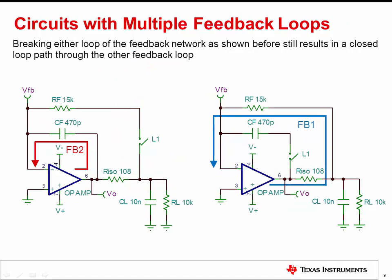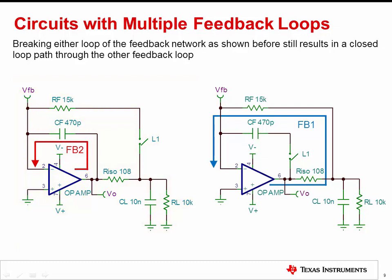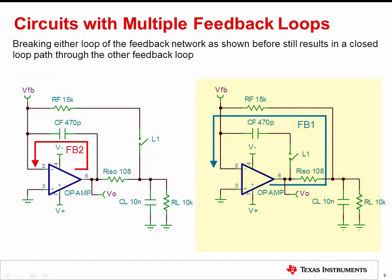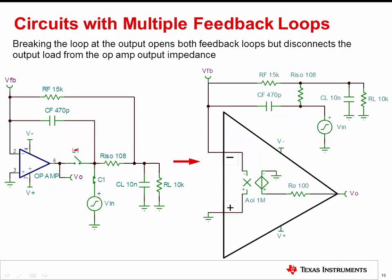Opening either feedback path still leaves a closed loop feedback path around the other loop. If FB1 is opened, FB2 remains a closed loop feedback path. If FB2 is opened, FB1 remains as a closed loop feedback path. The circuit will not properly report open loop curves unless both feedback loops are open. Breaking the loop directly at the output will remove the connections between the output and both feedback loops, resulting in an open loop circuit.